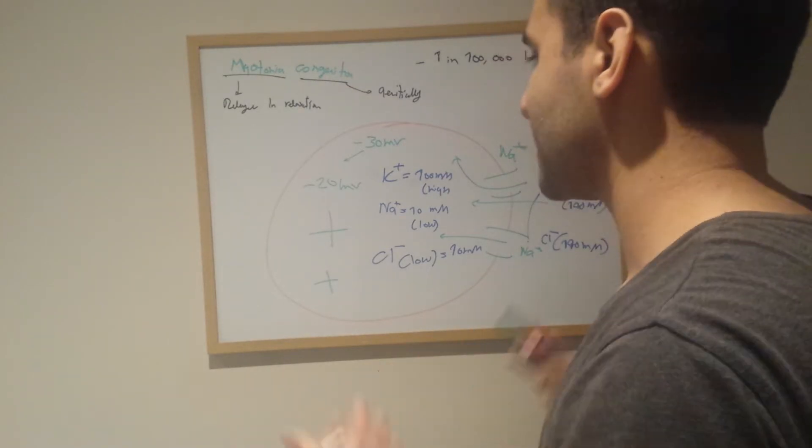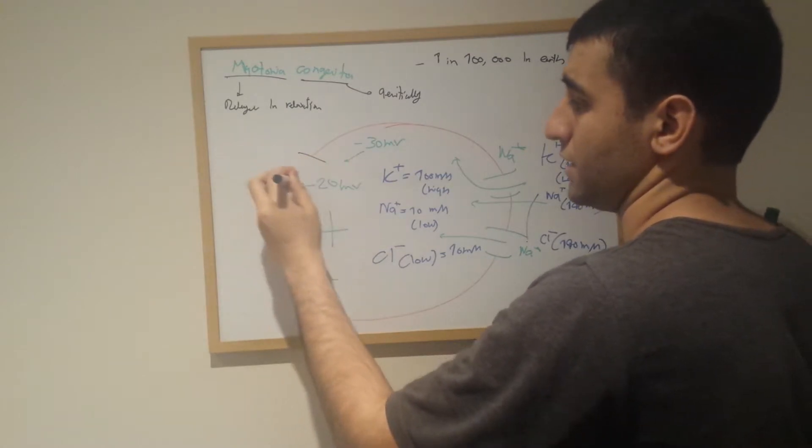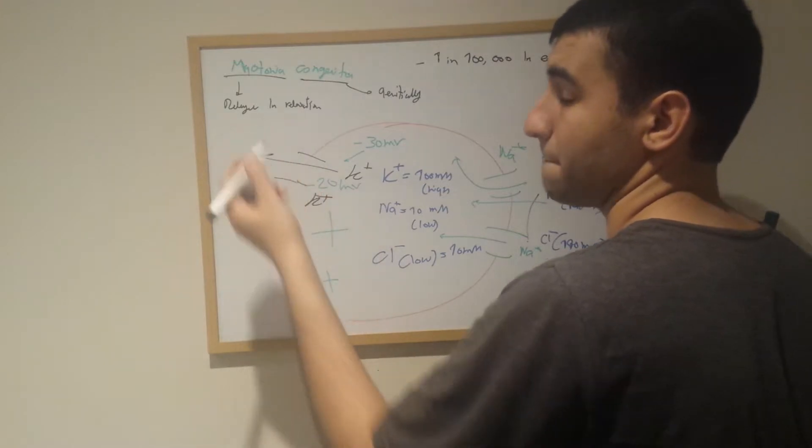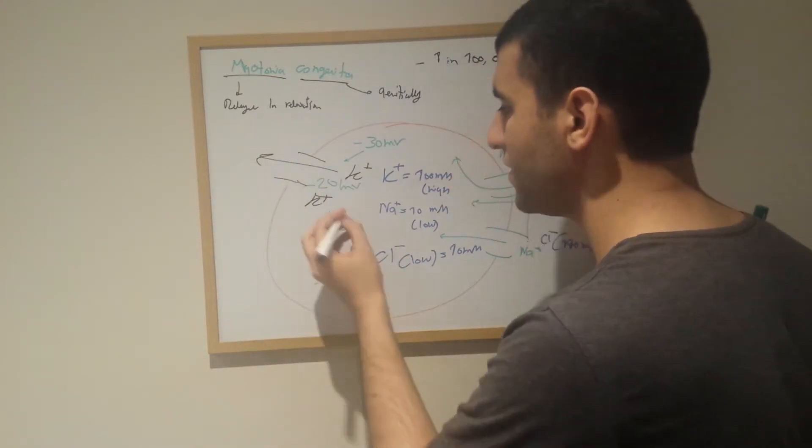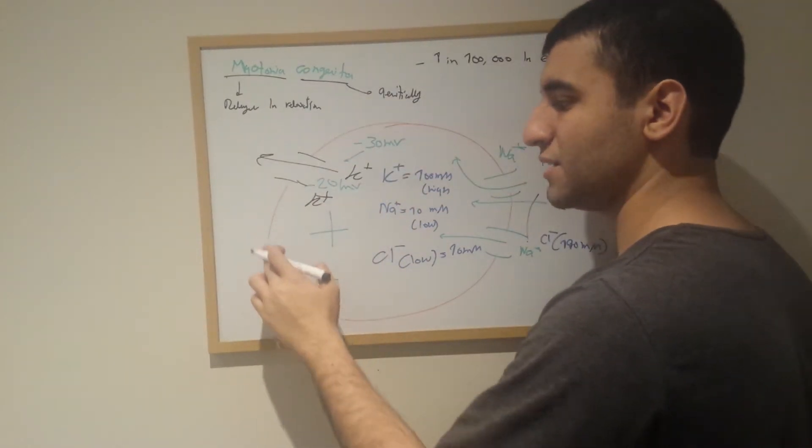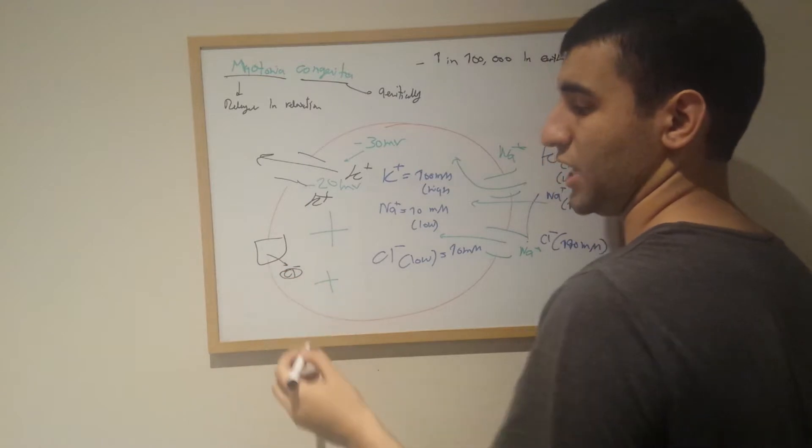For it to be relaxed we have two different approaches. We have an approach such as the potassium channel, which essentially allows the potassium to leave the cell making it more negative. Or more importantly we have a Cl- channel, Cl- voltage-gated channel.